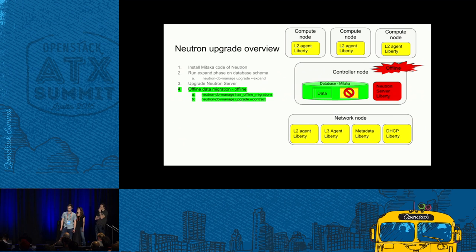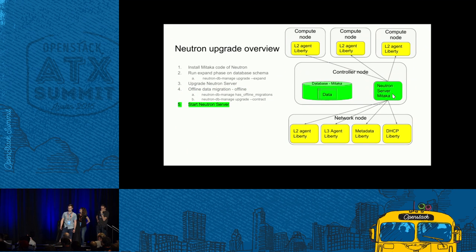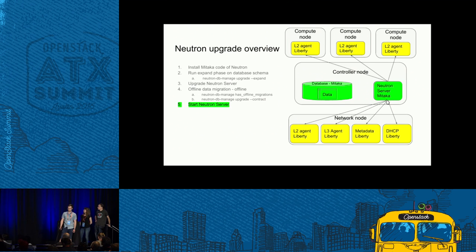After that, we can run the contract migrations, which are not allowed to run while the Neutron server is also running — so there is also an offline phase. The time it takes depends on how much data you need to migrate, because the contract phase in Neutron also does data migration. During the Mitaka cycle, we introduced the offline migrations CLI command, which checks if there is a contract migration pending. If not, you can skip this contract phase. After completing the data migration, we switch on the Neutron server, and the new server talks to the older agents — code must be compatible between the Neutron server and the L2, L3, and DHCP agents.